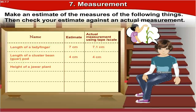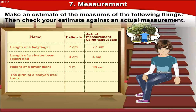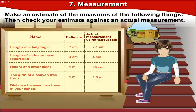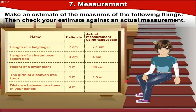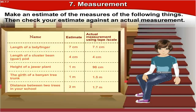Height of a guar plant — Selene measured it to be 1 meter, but the actual measurement was 90 centimeters. Quite close! Anil's estimate for a tree was 1 meter, but the actual measurement was 1.5 meters — still quite close. Distance between two trees in the school — Raju estimated 2 meters, and the actual measurement was 1.7 meters. Great job, Raju, quite close!